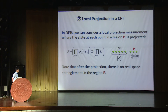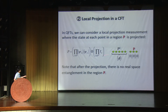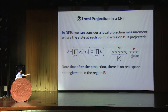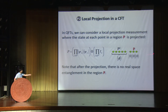Let me start with local projection. In quantum field theory, we can consider a local projection measurement where the state at each point in a particular region is projected — for example, all spins up or down. Each spin is projected to a particular state. This projection operator acts pointwise, and on the complement of C it acts as the identity. After this projection, there is no real-space entanglement remaining in region P.